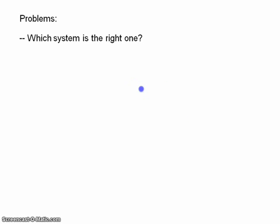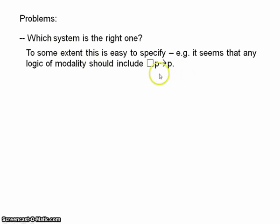Now, in some cases, it's fairly easy to say just what a logic of modality should include. For example, we probably want to say that if something is necessary, then it is the case. So, if necessarily P, then P. A modal logic should probably include that. Another one it should probably include is if P, then possibly P. We want to say that if something is the case, then it's possible. So, to some extent, we can say what sort of formulas a modal logic should allow to be derivable.